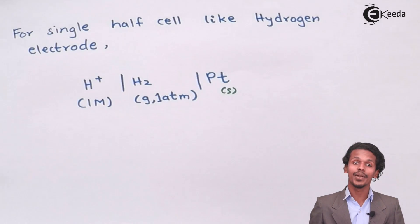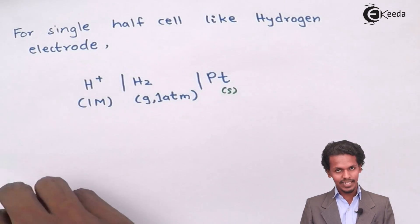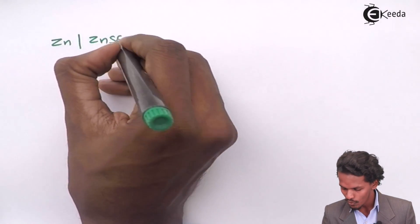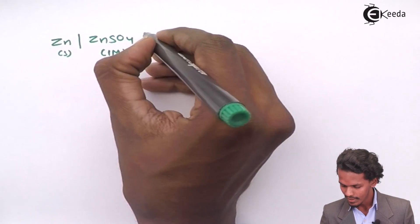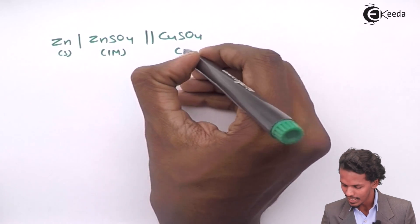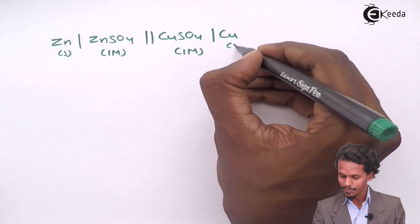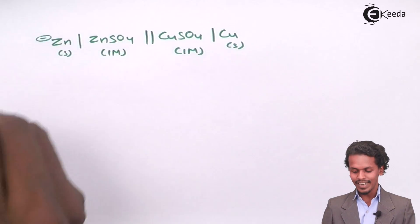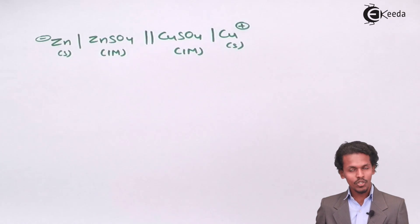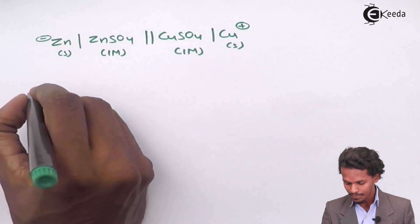From the cell formula, we can also predict what the cell reaction would be without drawing the cell diagram. For the Daniell cell, we write Zn | ZnSO₄ (1M) || CuSO₄ (1M) | Cu. Since Zn is the anode, it acquires a negative charge in the galvanic cell, while copper acquires a positive charge. At the anode, oxidation takes place.